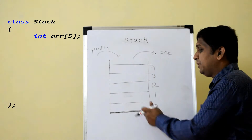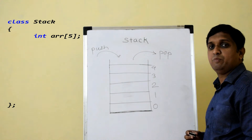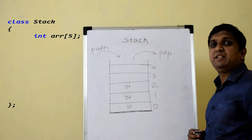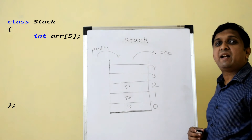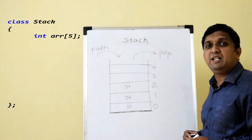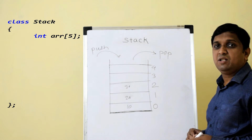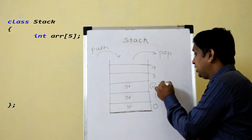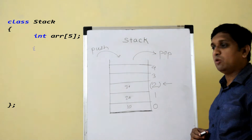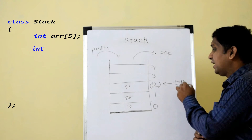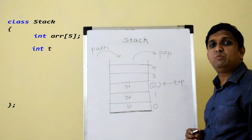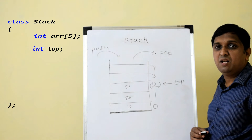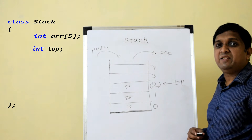The stack may or may not have elements. If there are elements like 20, 20, 30, I need to keep track of the topmost element. So I take one more variable inside the class which is the top variable — that will be the second data member.